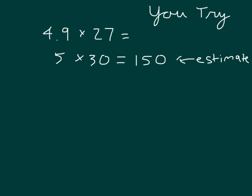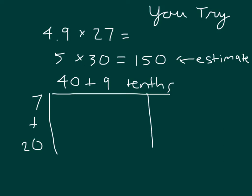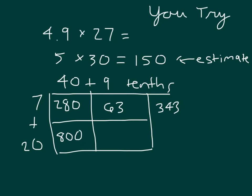Is this what you got for your model? Did you get 40 plus 9 tenths? And then 7 plus 20, is that how you set that up? And then as we continue working through that, this is what we should have gotten for those products. That's 280, 63, and 280 plus 63 is 343. 20 times 40, which is 800, and then 20 times 9, which is 180. 800 plus 180 is 980.